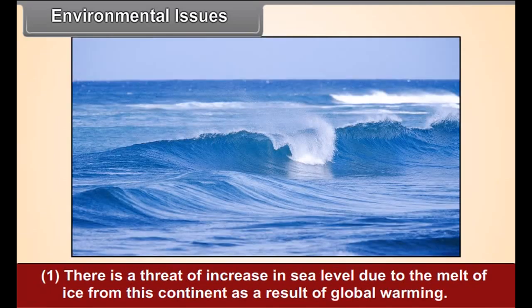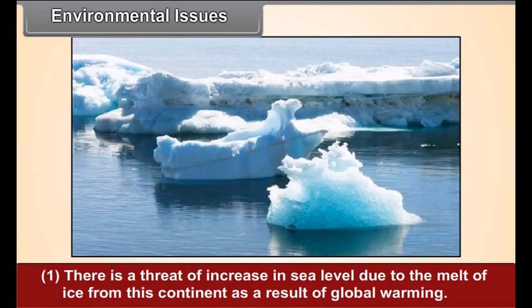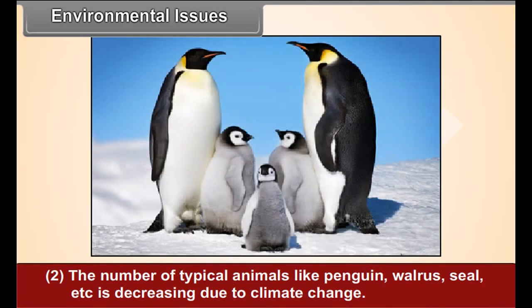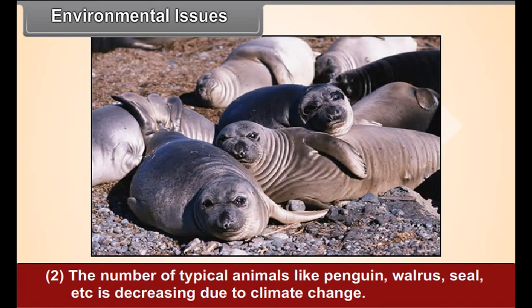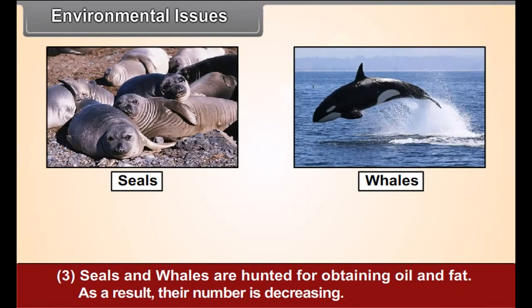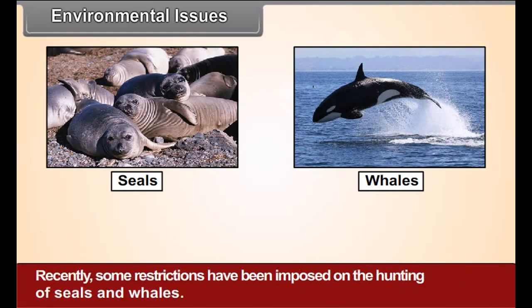Environmental Issues: Even in this high-latitude and uninhabited continent, some environmental issues have cropped up. Number 1: There is a threat of increase in sea level due to the melt of ice from the continent as a result of global warming. Number 2: The number of typical animals like penguin, walrus, seal, etc. is decreasing due to climatic change. Number 3: Seals and whales are hunted for obtaining oil and fat. As a result, their number is decreasing.